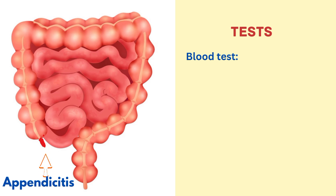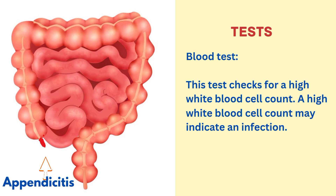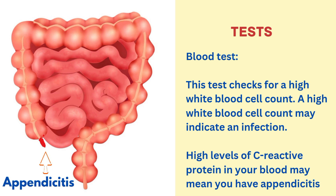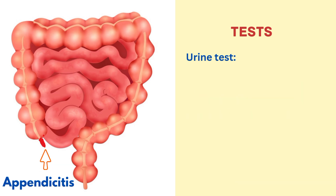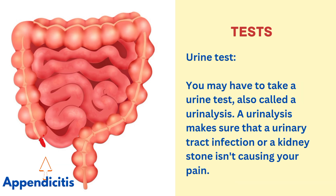Diagnostic tests include a blood test, which checks for a high white blood cell count indicating infection, and high levels of C-reactive protein in your blood, which may also indicate appendicitis. A urine test, also called a urinalysis, may also be required.